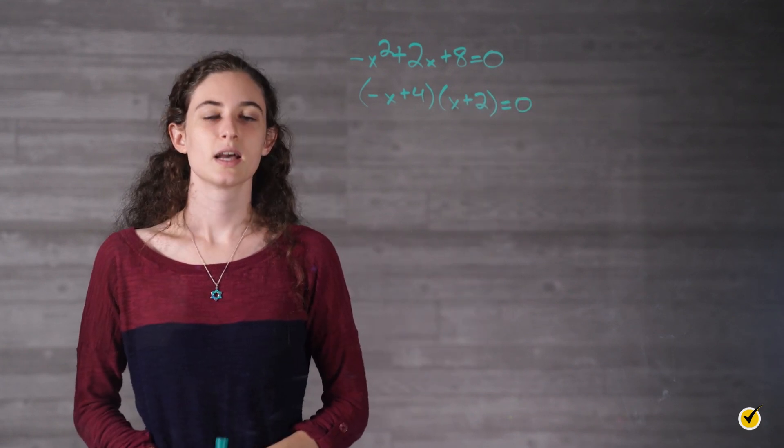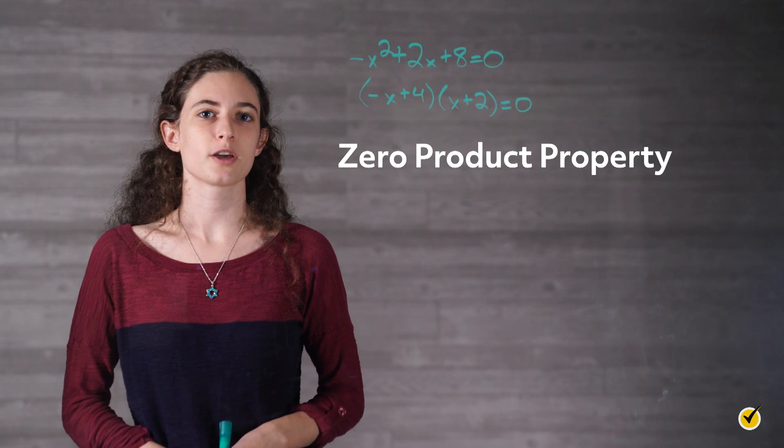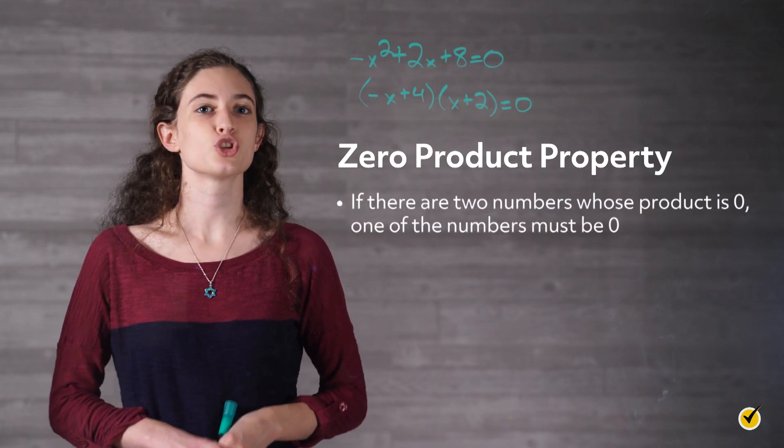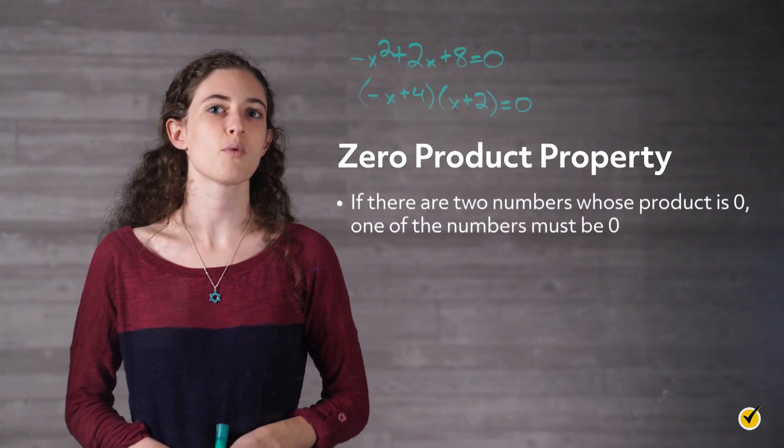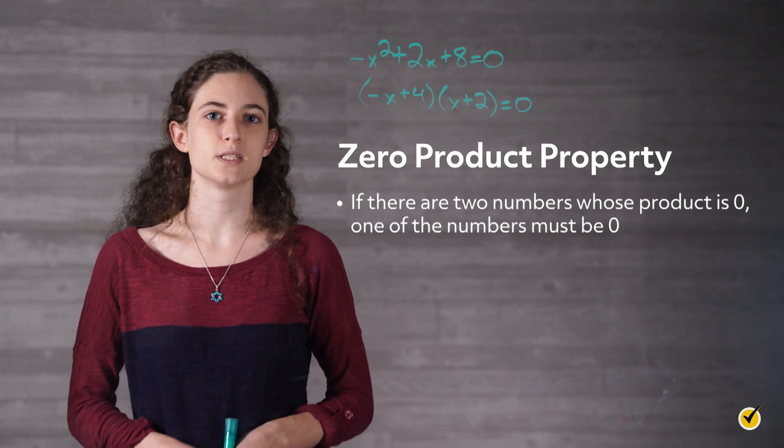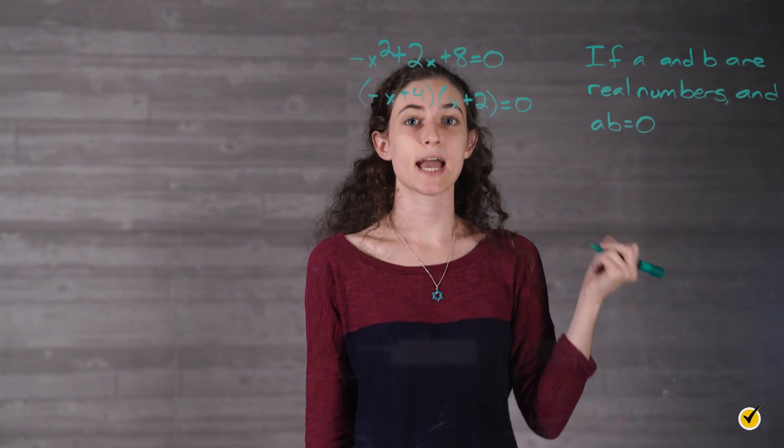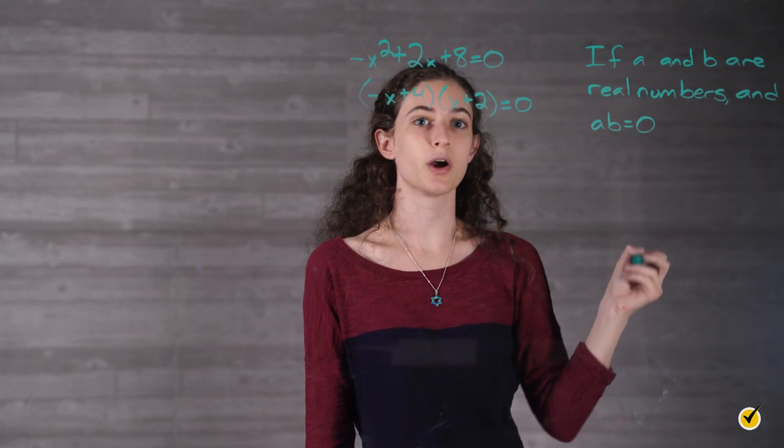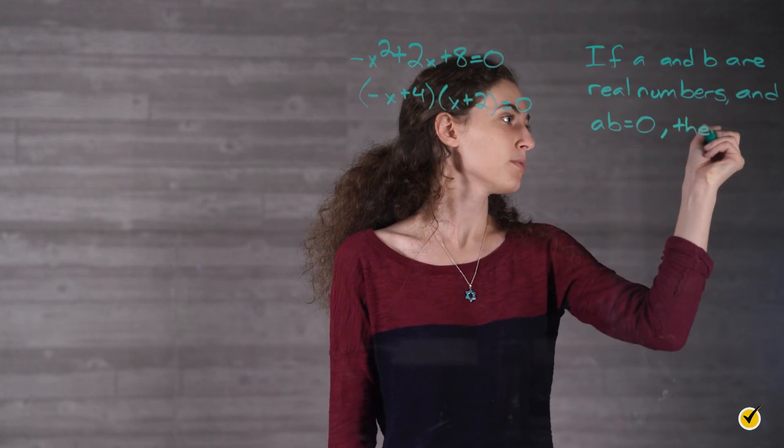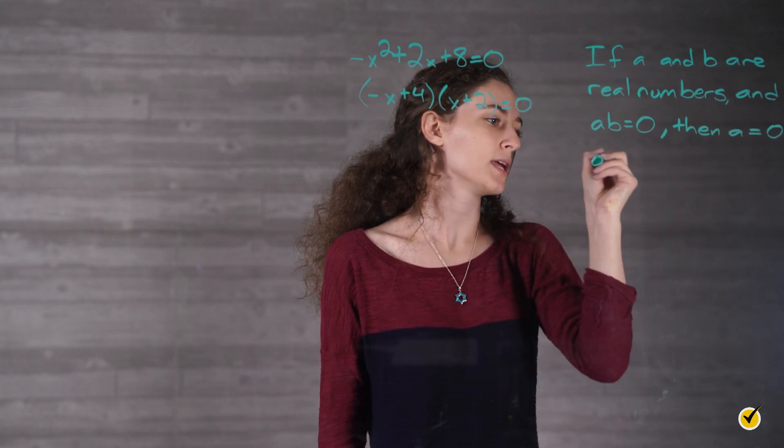Now let's pause. There's a property called the zero product property that says that if there are two numbers whose product is zero, one of the numbers must be zero. In more mathematical terms, if a and b are real numbers and a times b equals 0, then a equals 0 or b equals 0.